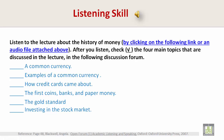Now let's look at the four main topics that were discussed in the lecture. The first one is common currency. The second one is examples of a common currency. The third one is the first coins, banks, and paper money. And the fourth one is the gold standard.